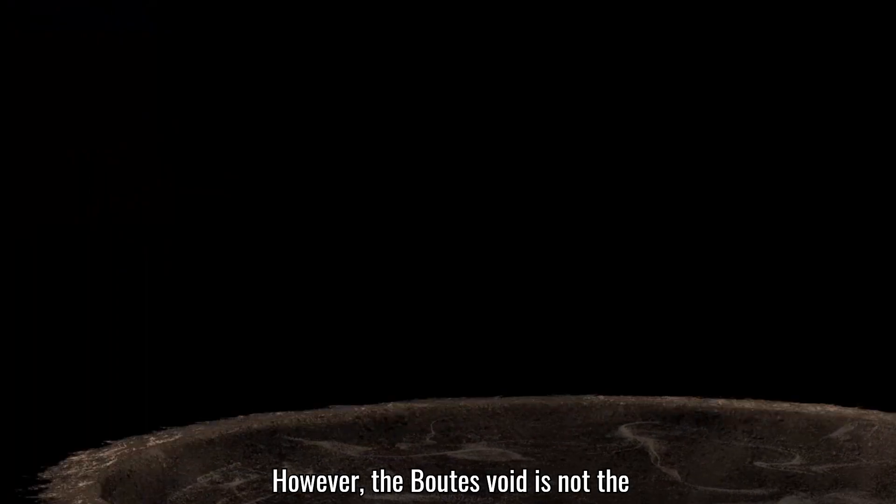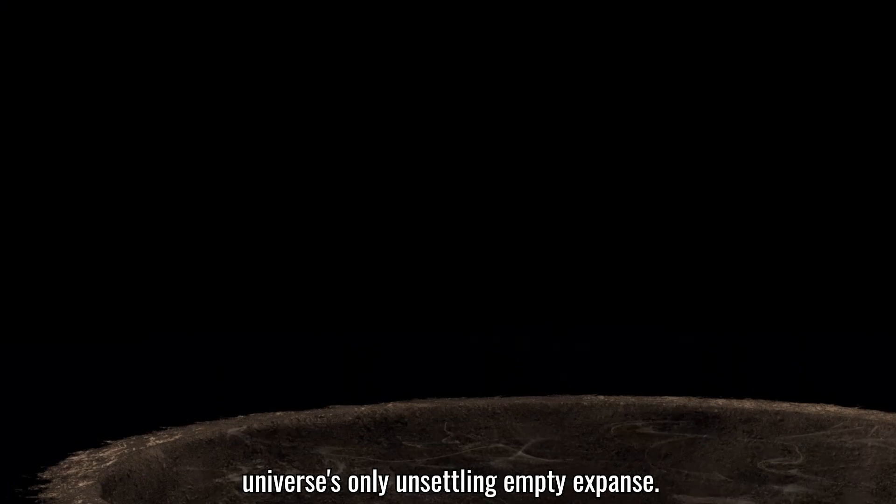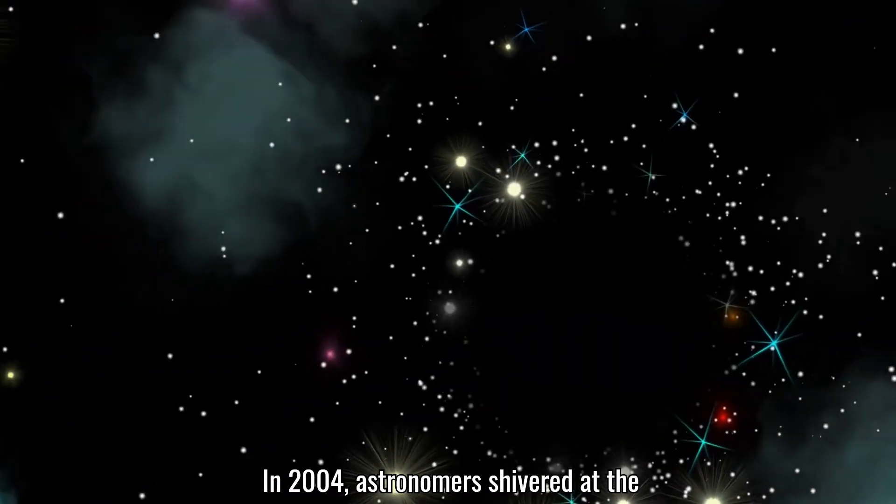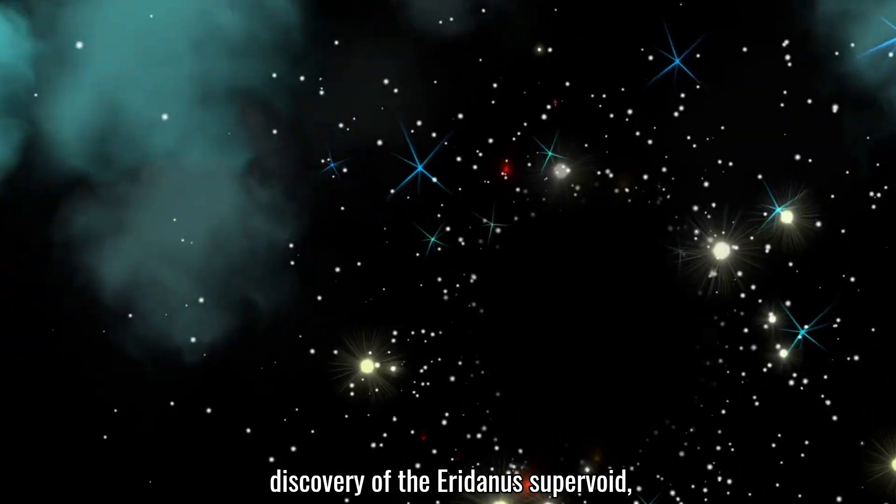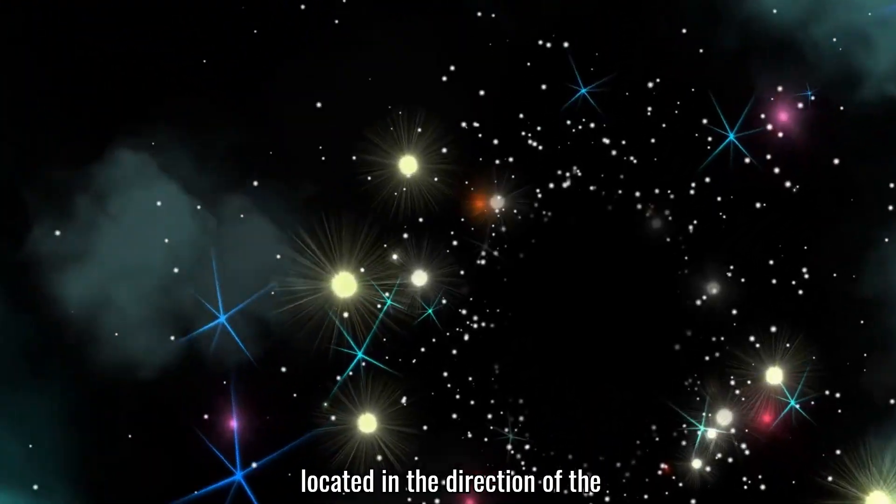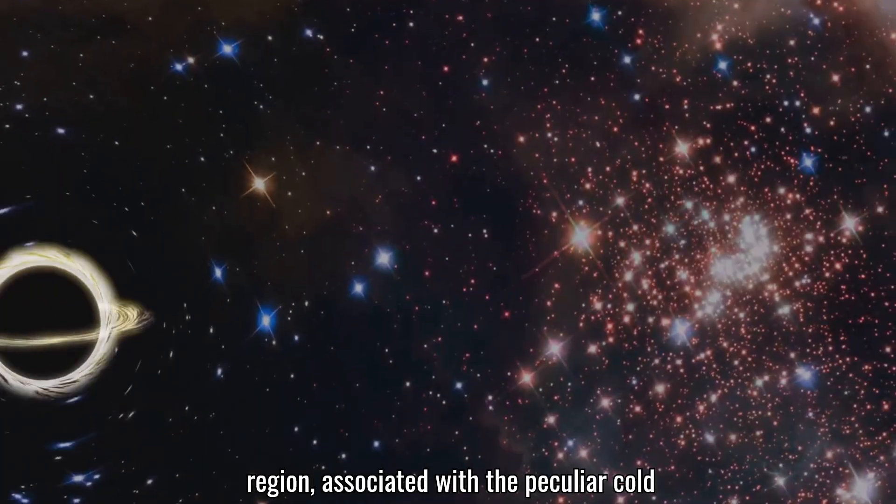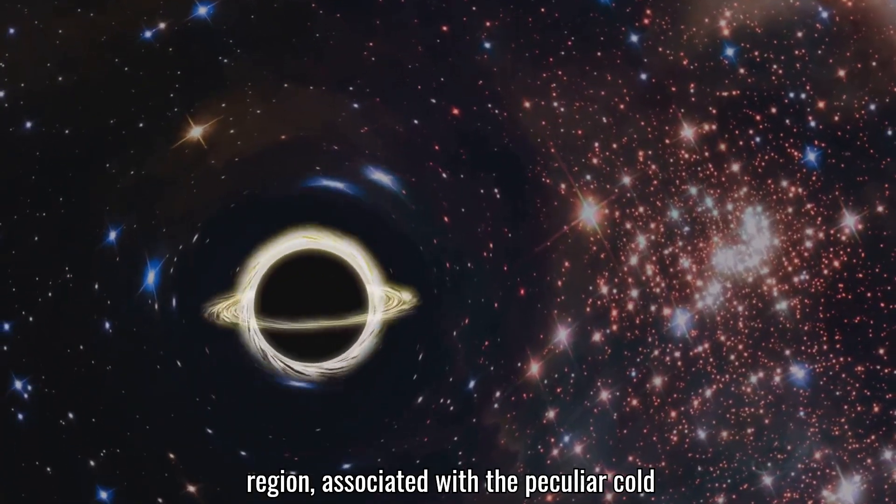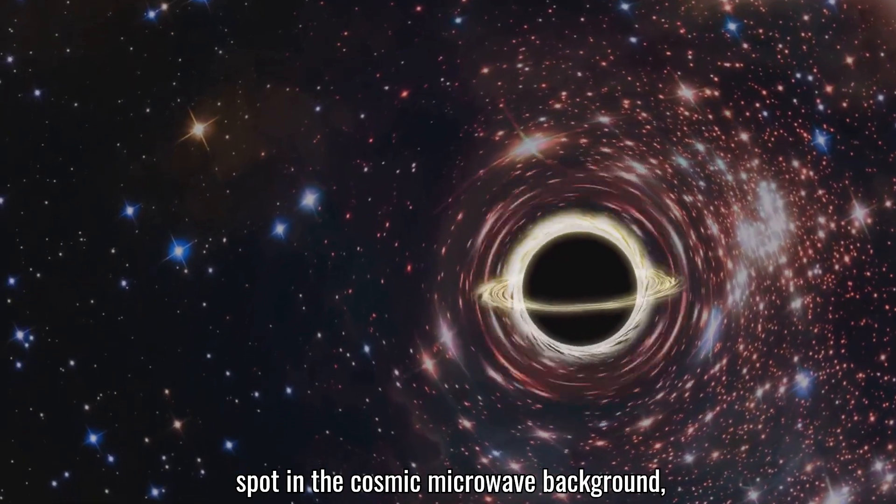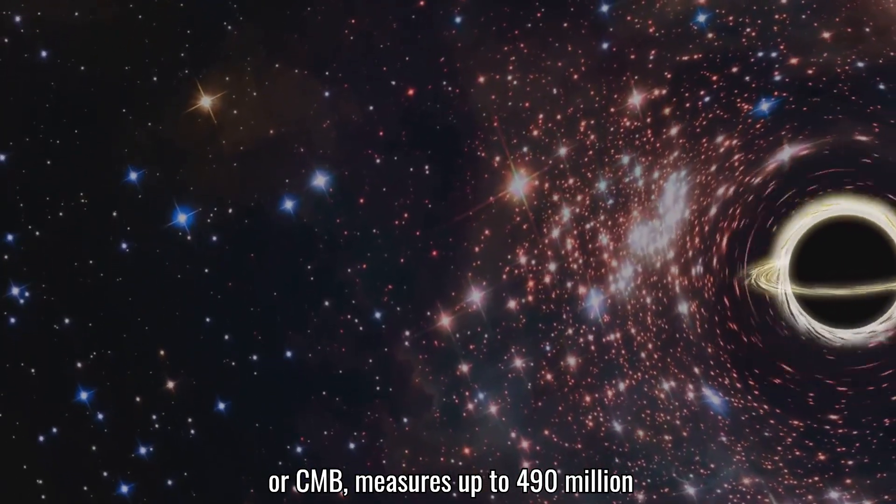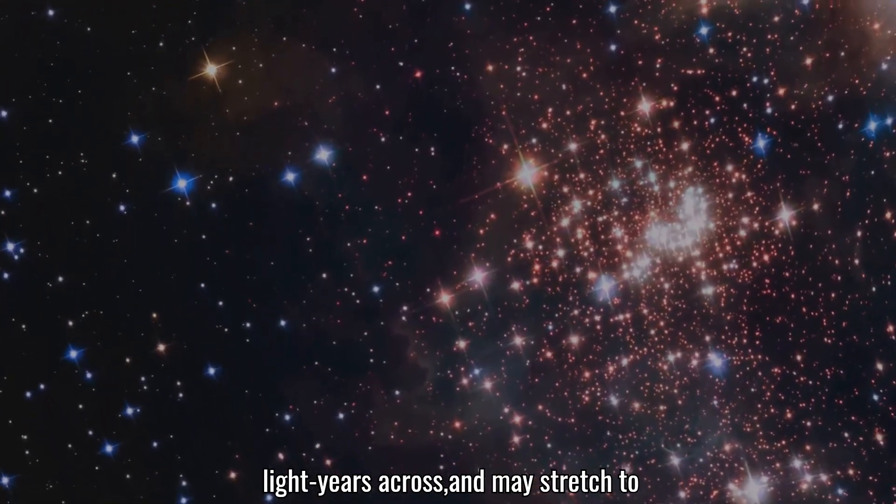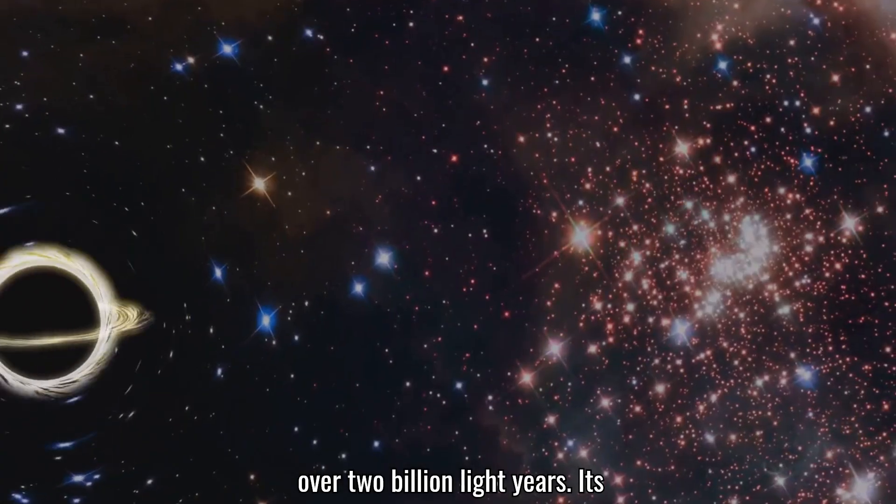However, the Boötes Void is not the universe's only unsettling empty expanse. In 2004, astronomers discovered the Eridanus Supervoid, located in the direction of the constellation Eridanus. This chilling region, associated with a peculiar cold spot in the cosmic microwave background or CMB, measures up to 490 million light-years across and may stretch to over 2 billion light-years.